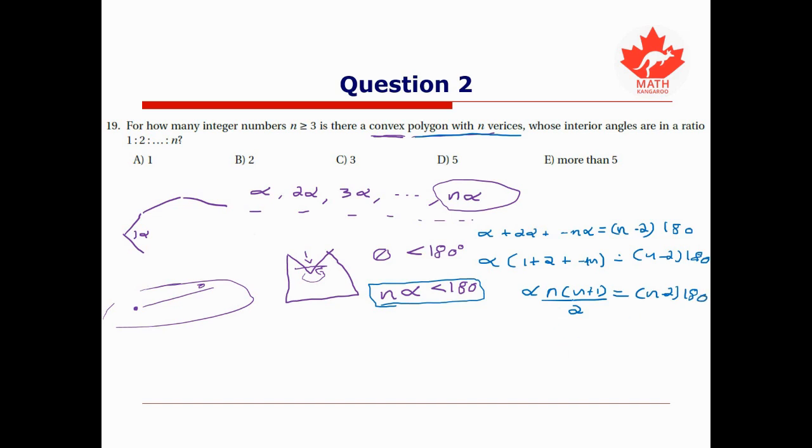And what I can do is, so I want to try and get something involving this nα here. So if I can move this (n + 1) and the 2 to the other side of the equation, I'll have my nα. So I'm going to do that. So I have nα is equal to now 2 times all of this. So that will give me 360 multiplied by (n - 2) divided by (n + 1).